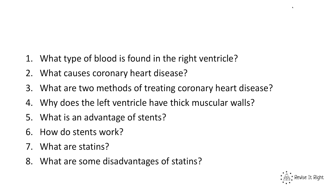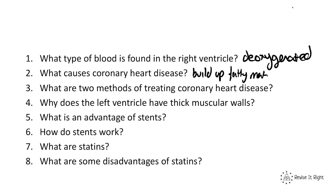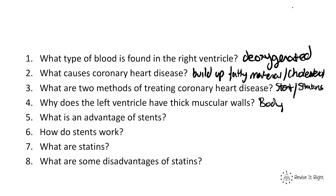Question one: what type of blood is found in the right ventricle? The blood has just come from the body and therefore it's going to be de-oxygenated blood. What causes coronary heart disease? A build-up of fatty material or cholesterol in the blood that sticks to the lumen of the coronary artery, causing a clog. What are two methods of treating coronary heart disease? Stents, which keep the arteries open, and statins, which are drugs. Why does the left ventricle have thick muscular walls? Because it has to pump blood around the whole body, whereas the right side only pumps blood around the lungs.